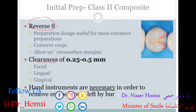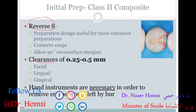Clearance is measured as the distance between the cavo-surface margin and the adjacent tooth — we shoot for about 0.25 to 0.5 millimeters, depending on the extent of the preparation. Hand instruments like the enamel hatchet or the gingival margin trimmer are almost always necessary to remove all the little enamel spicules and spurs left by the burr.